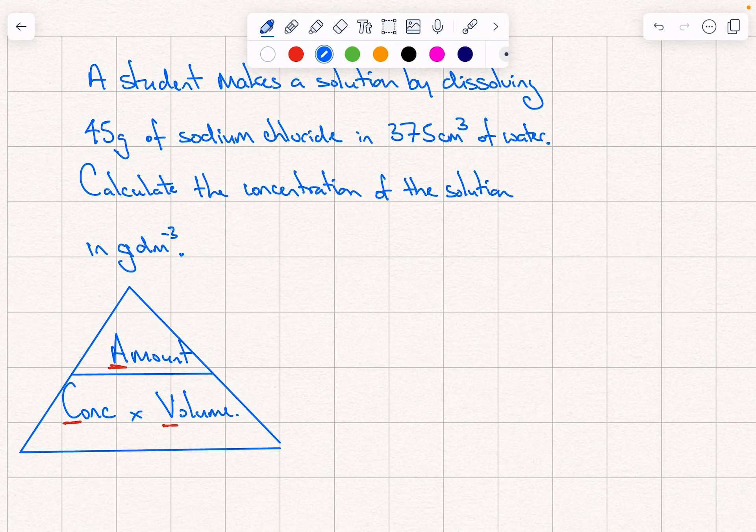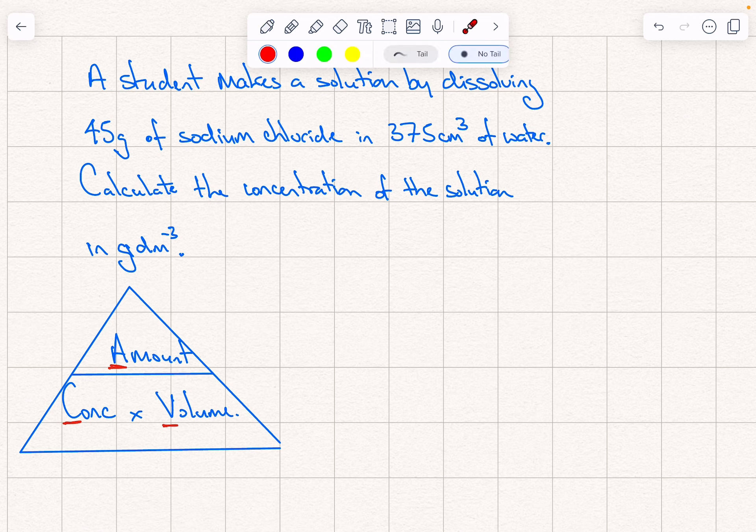Okay, in this question we've been asked to calculate the concentration of a solution when we have 45 grams of sodium chloride being dissolved in 375 centimeters cubed of water. So to do this we're going to use our concentration triangle.